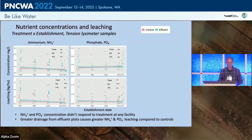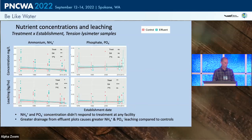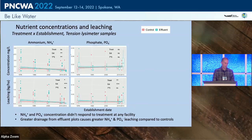Revisiting the establishment-date loading rate diagram: for ammonium and phosphate concentration we don't see any clear treatment effects. There is somewhat of an effect on slope based on establishment date, but the lines don't really separate for these two nutrients.